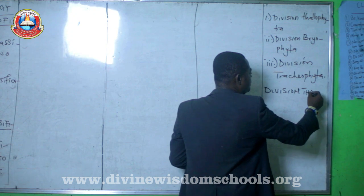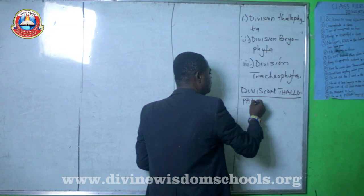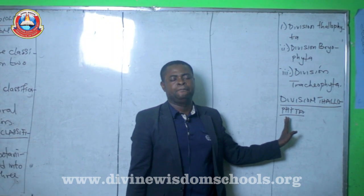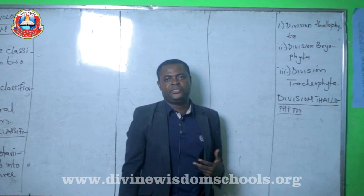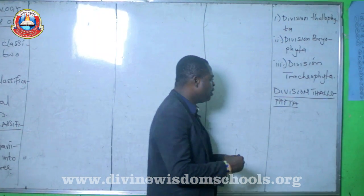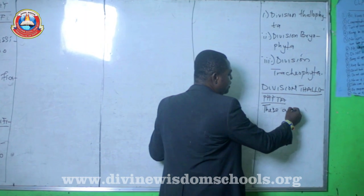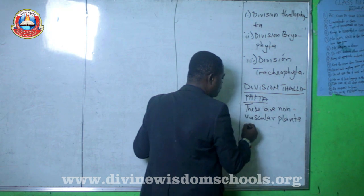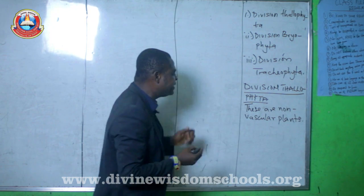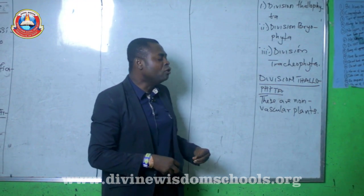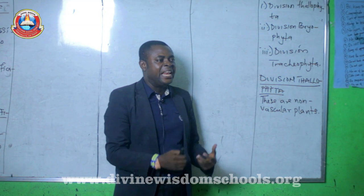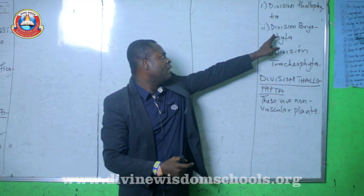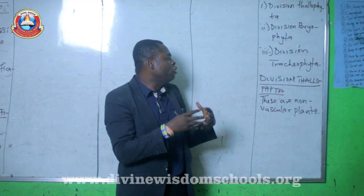Division Thallophyta — what are we talking about? We are talking about plants that are non-vascular. These are non-vascular plants. We mean that they do not have conducting tissue such as the xylem and the phloem tissue that is present in division Tracheophyta. Division Bryophyta is also non-vascular.